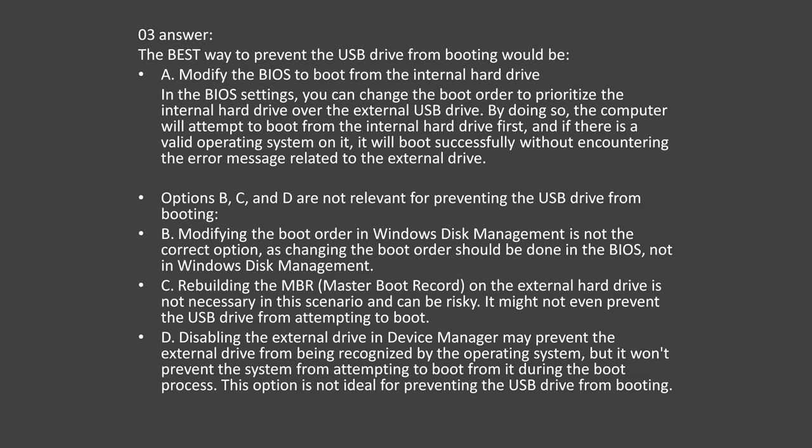The best way to prevent the USB drive from booting would be Option A: Modify the BIOS to boot from the internal hard drive. In the BIOS settings, you can change the boot order to prioritize the internal hard drive over the external USB drive. By doing so, the computer will attempt to boot from the internal hard drive first, and if there is a valid operating system on it, it will boot successfully without encountering the error message.